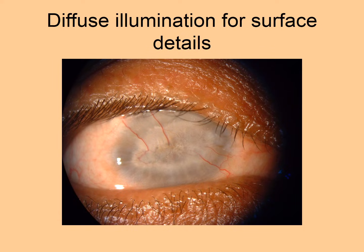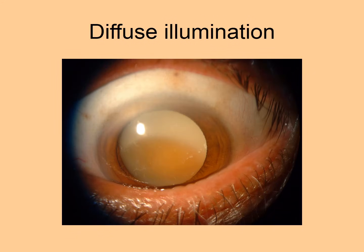Diffuse illumination is used whenever the emphasis is on surface details. In this case of a total corneal opacity, the surface details are of paramount importance and diffuse illumination is adequate. Here also, where the emphasis is on the lens, diffuse illumination gives you enough information, though focal illumination would give still more detail of the sunken nucleus of the Morgagnian cataract.